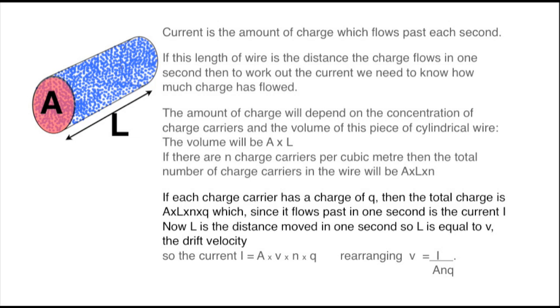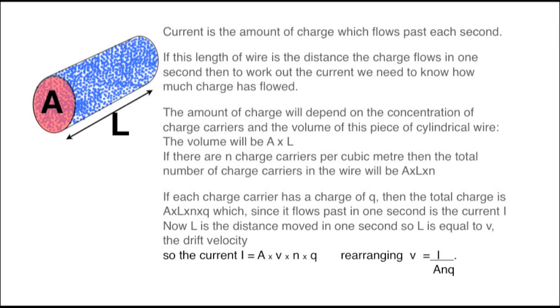We defined L as the average distance moved each second. Distance per second is velocity, so L is equal to V, the drift velocity. Just swapping the L for a V, we have the current I equals AVNQ.